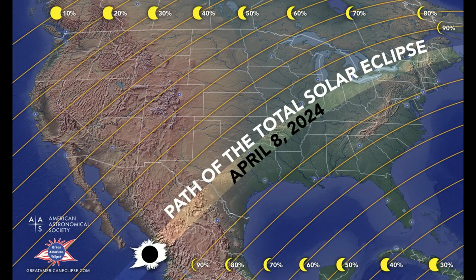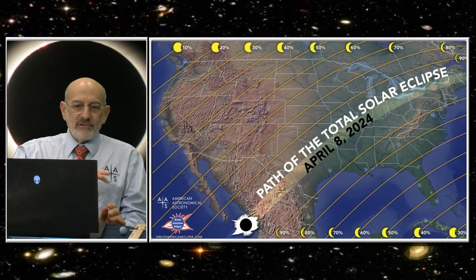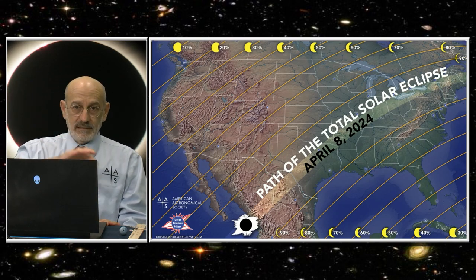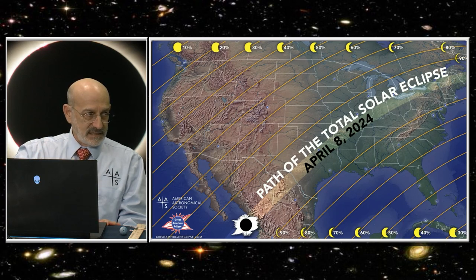In order to see a total solar eclipse you have to be within the path of totality. This is the path that the moon's shadow sweeps out across earth's surface as it moves in its orbit. On April 8th it'll be about 115 miles wide, so it's pretty narrow.